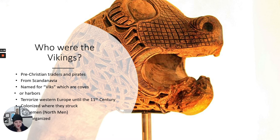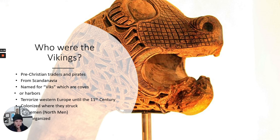They terrorized Western Europe until the 11th century and beyond. They went to Ireland, Iceland, Greenland, Newfoundland in Canada — so they made it to the New World — and Russia. They colonized where they struck and were very organized — not just brutes. They had colonies in Ireland, England, France, the Baltics, and Russia. Normandy, the north shore of France, is called Normandy because the Norsemen — who became the Normans — populated that area of France. We'll talk about a Norman duke who sailed across the English Channel and became the ruler of the Anglo-Saxons later. Spoiler alert: it's William the Conqueror.